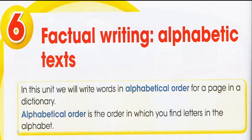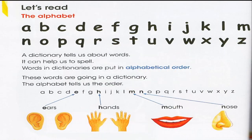The English alphabet starts from A and it ends with Z. Let's read the alphabet: A, B, C, D, E, F, G, H, I, J, K, L, M, N, O, P, Q, R, S, T, U, V, W, X, Y, Z.